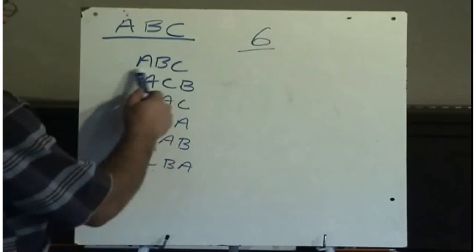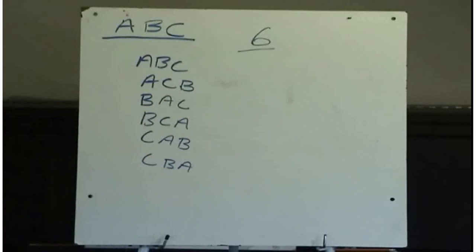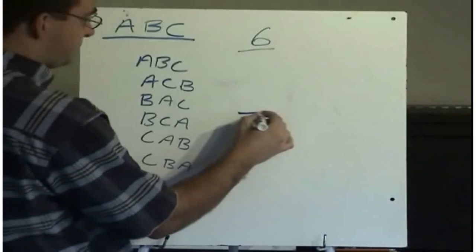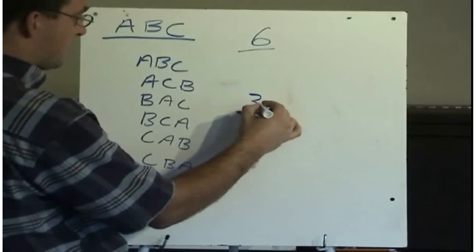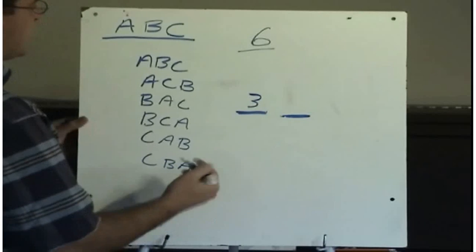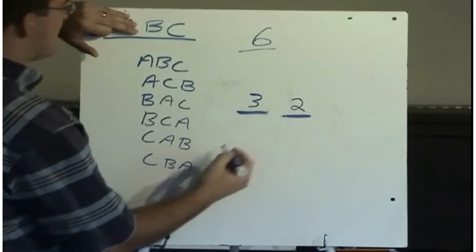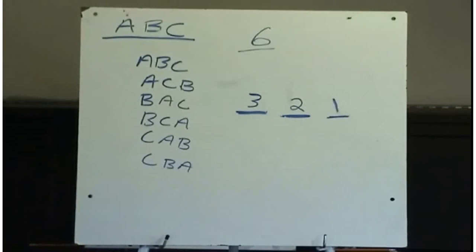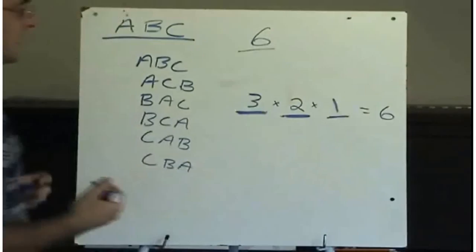We don't want to have to be listing all of these different outcomes to figure out the number of permutations. So we can use the fundamental counting principle. If we consider we've got three letters A, B, and C — how many choices do we have to select a letter to start with? We have three choices for our first letter. Once we've selected that letter, say it was an A, we would now have two letters to choose from. Then once we've chosen two, it only leaves one letter left. So if we multiply three times two times one, we get six.